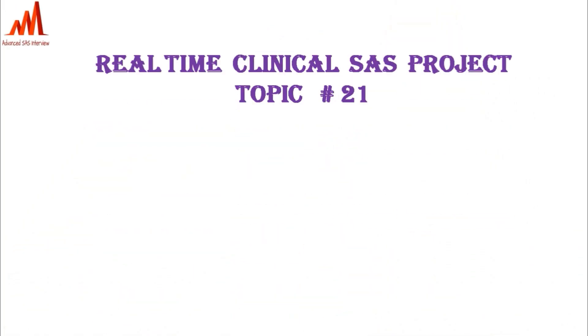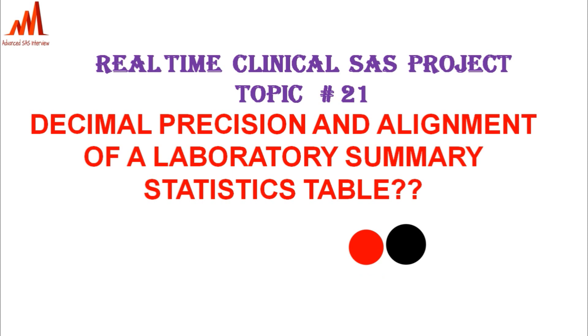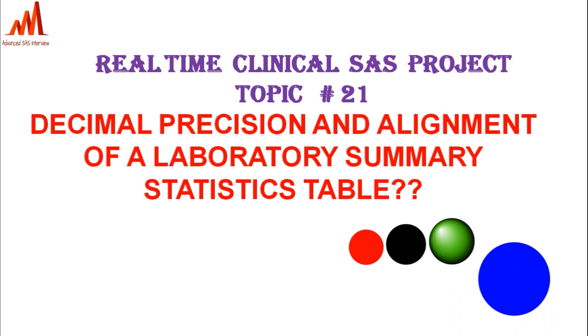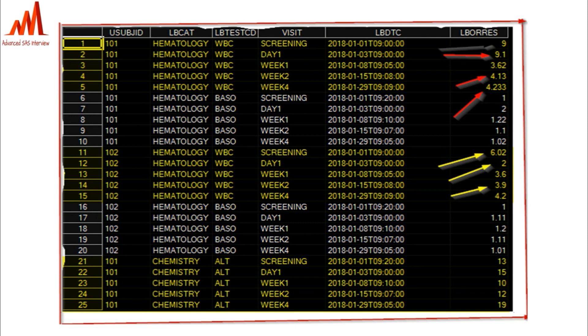Hello everybody, welcome to my channel. Today I am going to explain real-time clinical SAS project topic 21 — decimal precision and alignment of a laboratory summary statistics table: how we are going to align and precisely handle decimals in a laboratory summary statistics table. Here is the dataset of a particular subject and particular lab category.